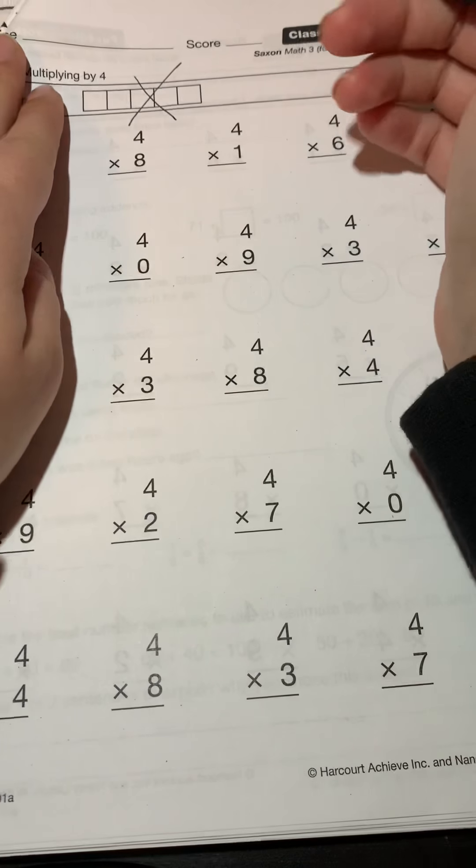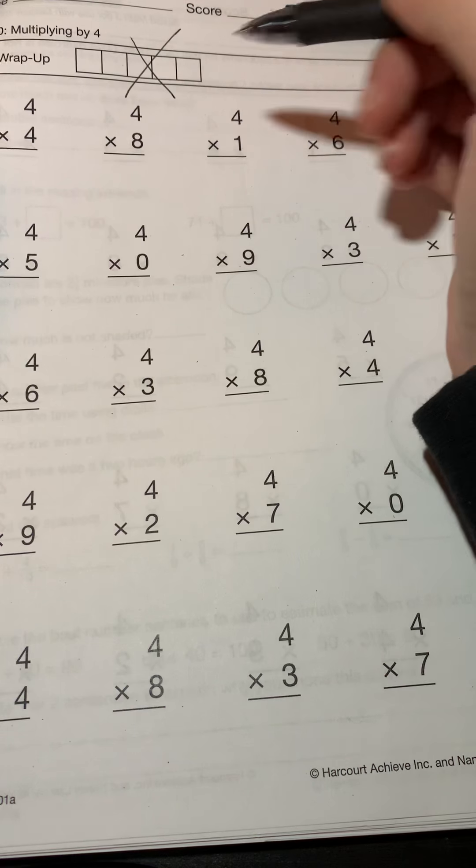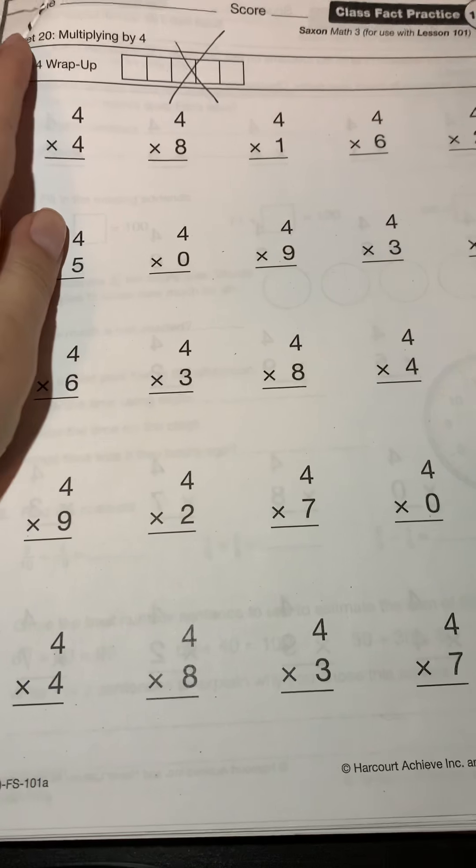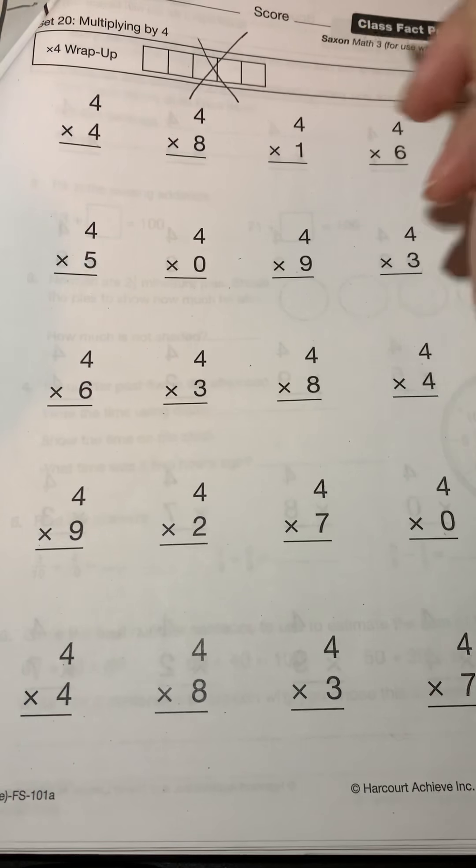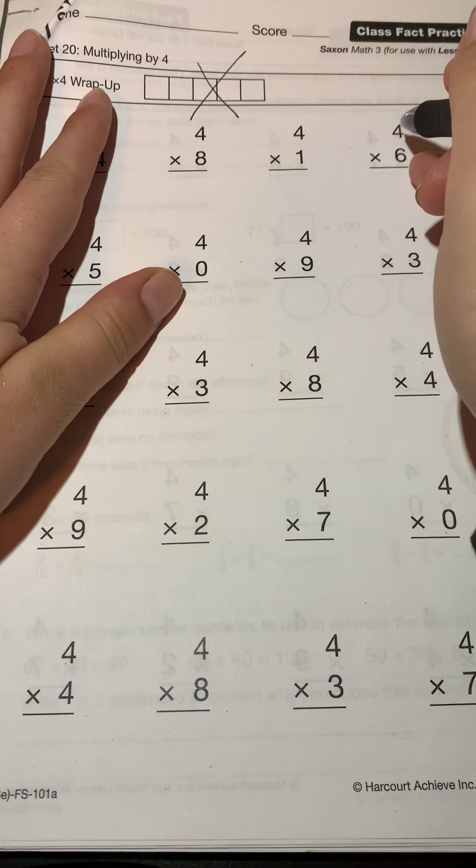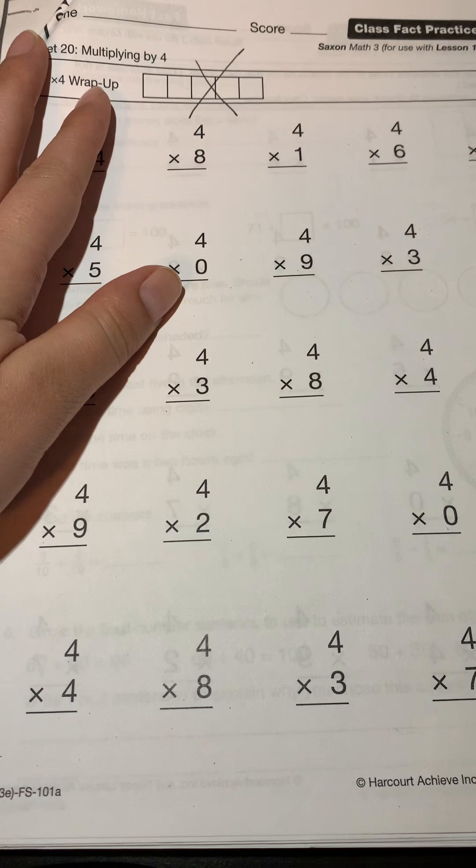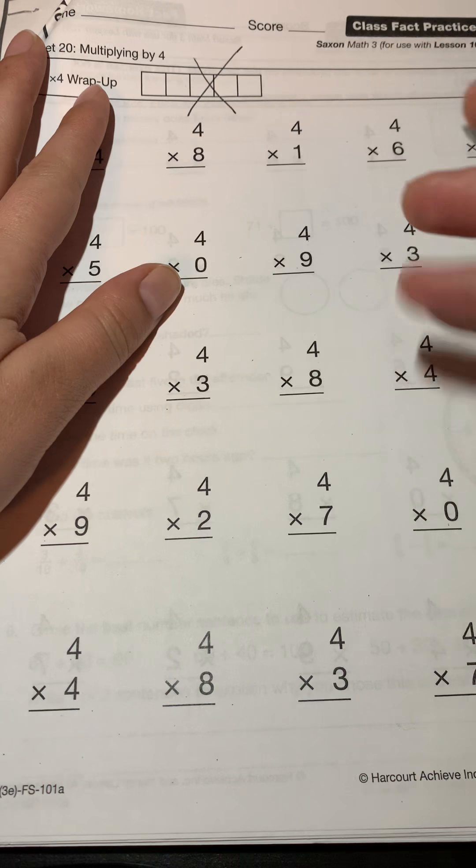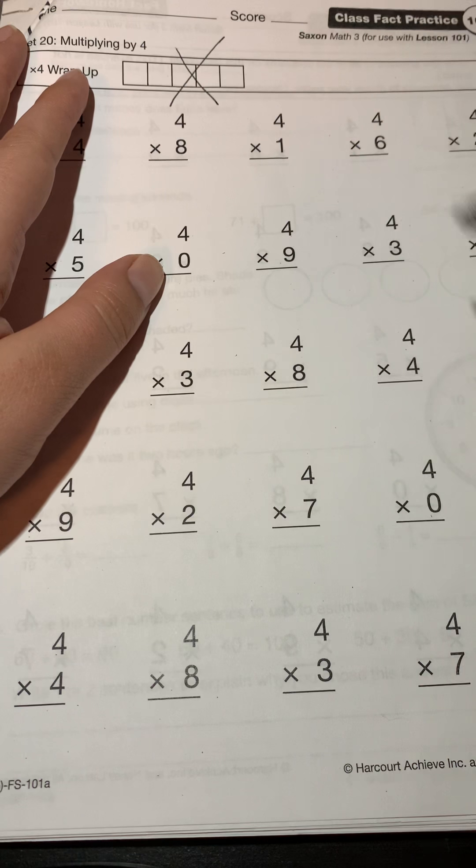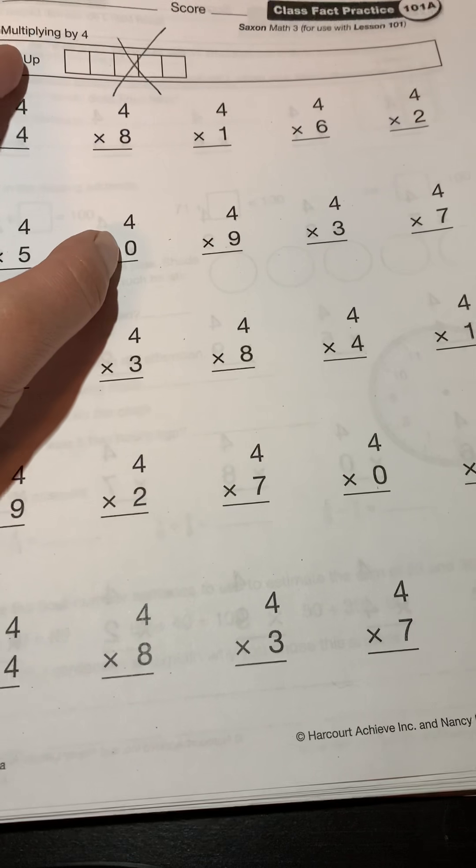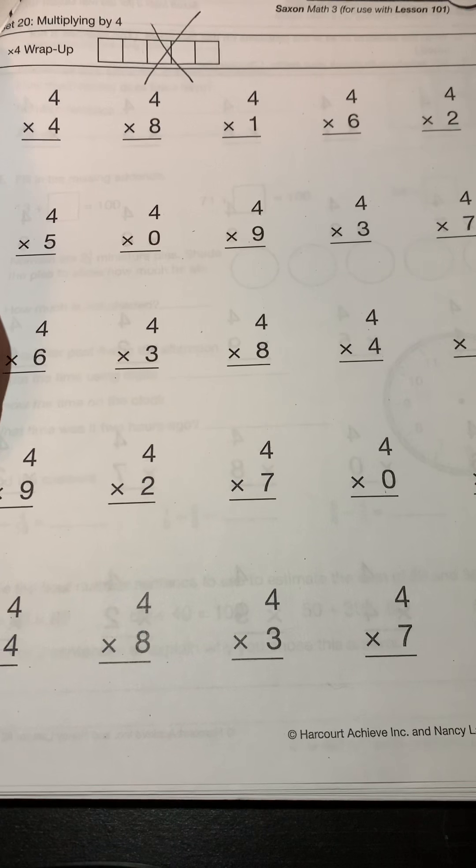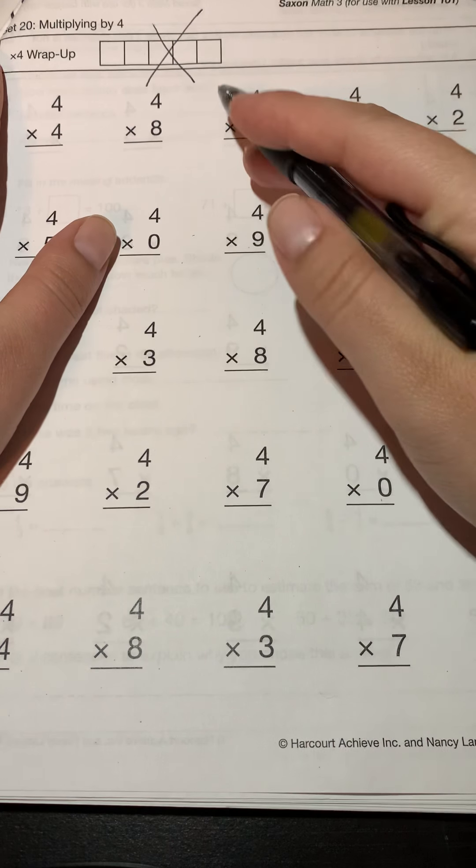All right guys, let's go ahead and look at our math for today. You can cross out the wrap-up unless you decided to cut out that paper where it had four on one side and then all the answers. If you cut that out and decided to use a string or yarn, you could go ahead and try to do that and fill this in here.